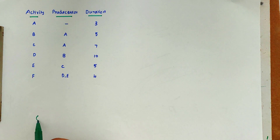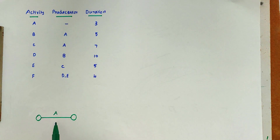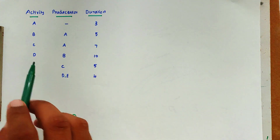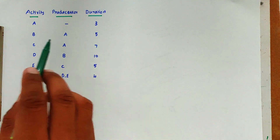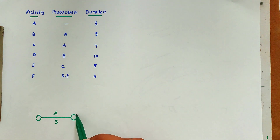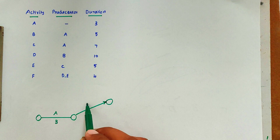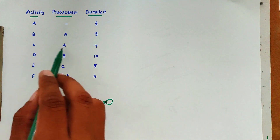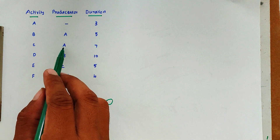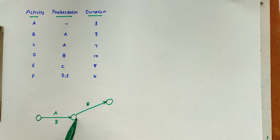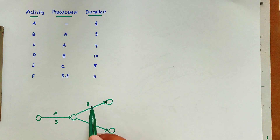We draw activity A with duration 3, and since it has no precedent activity, it starts the network. For activity B, activity A is the preceding activity, so we draw B after A. Activity C also has A as its preceding activity, so we draw C branching from A as well.